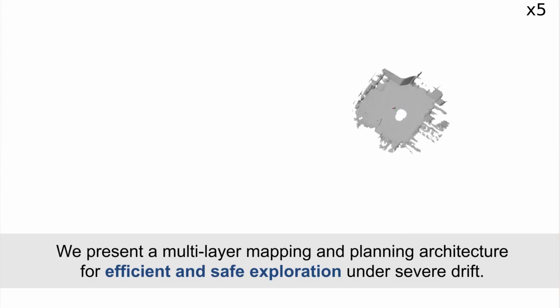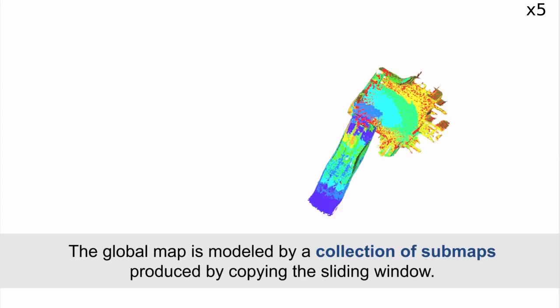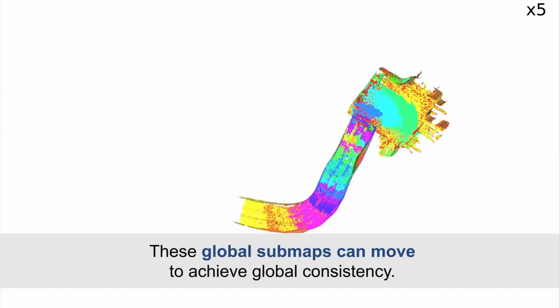We present a multi-layer mapping and planning architecture for efficient and safe exploration under severe drift. Sensor measurements are integrated into a temporally local sliding window map. The global map is modeled by a collection of sub-maps produced by copying the sliding window. These global sub-maps can move to achieve global consistency.